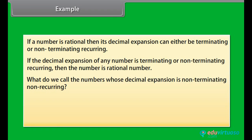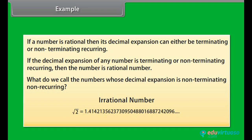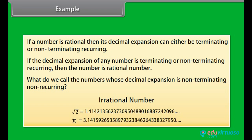And what do we call the numbers whose decimal expansion is non-terminating, non-recurring? Those numbers are irrational numbers. For example, square root of 2, pi, etc.